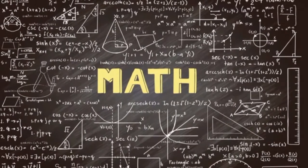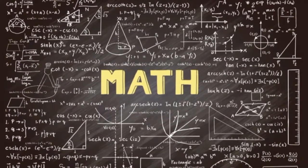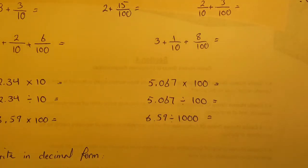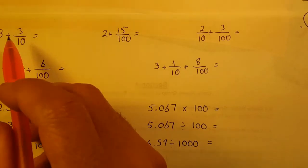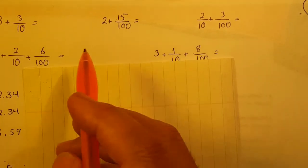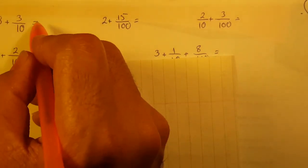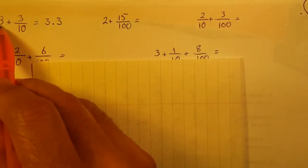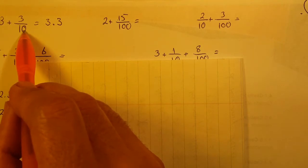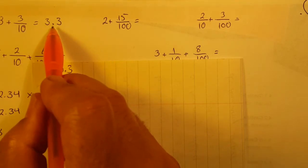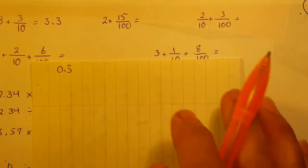In this channel we try to review all different chapters of primary school math. We continue the section of decimals. 3 plus 3 over 10 is equal to 3.3 — 3 is the whole number, 3 over 10 is equal to 0.3, so 3 and 0.3 gives us 3.3.